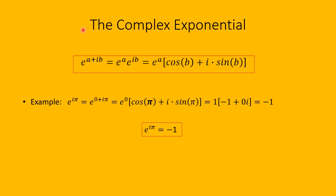Now let's define the exponential of a complex number. Let's look at e to the a plus ib, where a and b are real numbers, so this exponent represents a general complex number. By laws of exponents, this equals e to the a times e to the ib. Now e to the a is just e to the a, and from what we saw earlier, e to the ib is cosine b plus i sine b. So e to the a plus ib equals e to the a times the quantity cosine b plus i sine b.